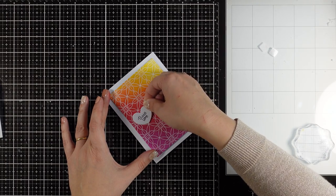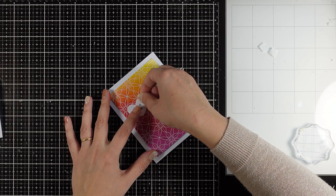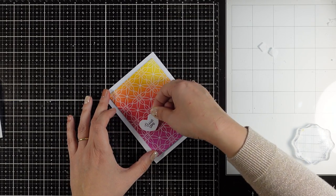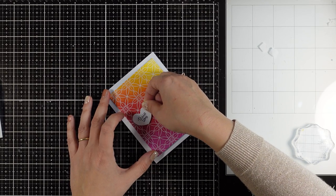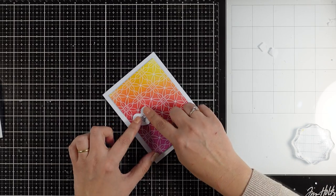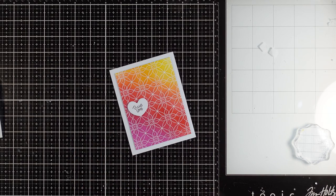I'm going to use foam tape at the back of my heart and just stick it there, and you can definitely stop here. The background is just gorgeous. Here I'm just auditioning the heart to decide where I want this to go. Finally, just to embellish it a little bit more...